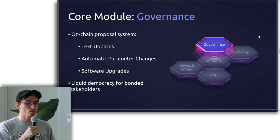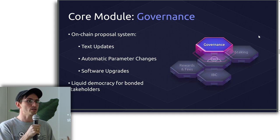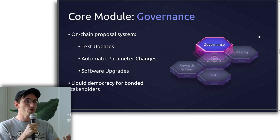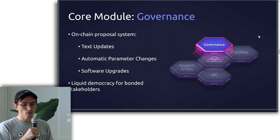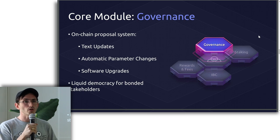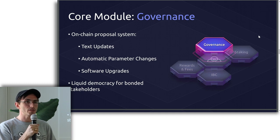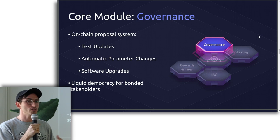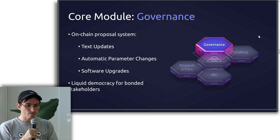We also have a governance module — liquid democracy. When you delegate your tokens to validators, that delegation can be used as voting power. You allow that validator to vote on your behalf, or you can use your tokens to vote differently than the validator you're delegating to. This includes the ability for on-chain parameter changes — something in between soft and hard governance — where parameters on the running system can be completely under control from the governance system, out-of-the-box ready.